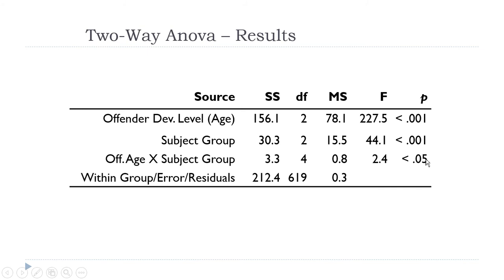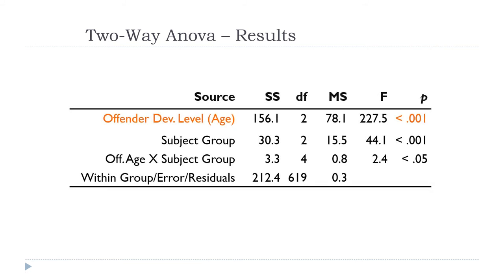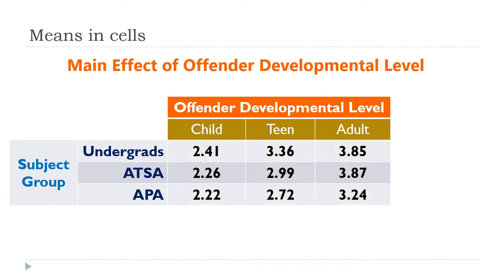The main effect of offender developmental level was significant. We can look at the means in the cells — we diagram these things as a two-way table, like a contingency table, except instead of putting frequencies in every cell, we put means. Every cell shows the mean accountability rating: for example, undergrads who received child offenders gave a mean rating of 2.41, undergrads for teens 3.36, etc.